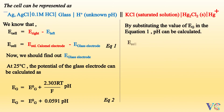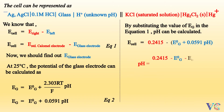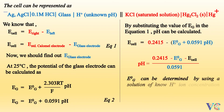So, EMF of the cell = 0.2415 − (E°_g + 0.0591·pH). Therefore, pH = (0.2415 − E°_g − EMF of the cell) / 0.0591. E°_g can be determined by using a solution of known H⁺ ion concentration and then measuring the EMF of that cell.